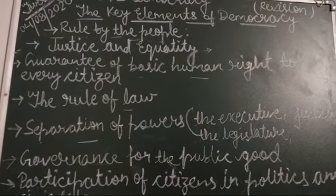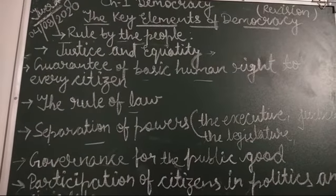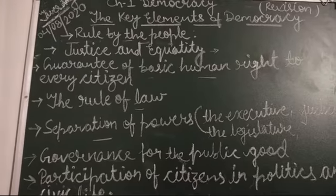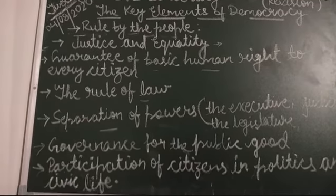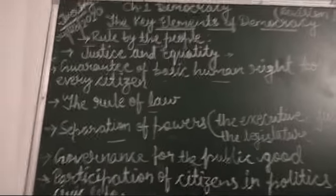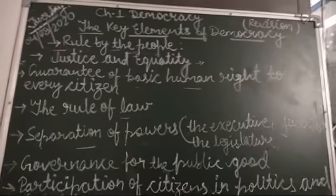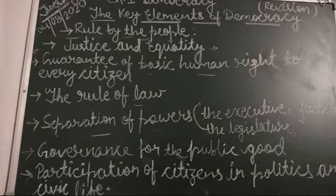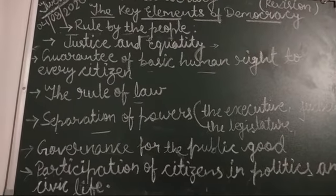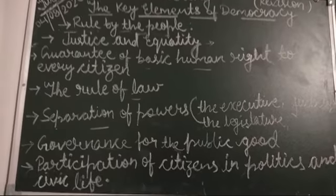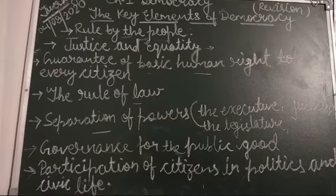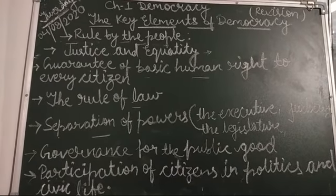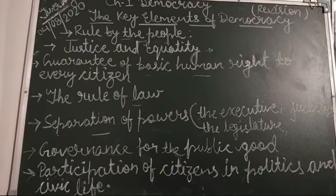The next element is governance for the public good. In a democracy, the government is elected to work for the good of the public at all times. The government is accountable to the general public and must work for the well-being of the public.